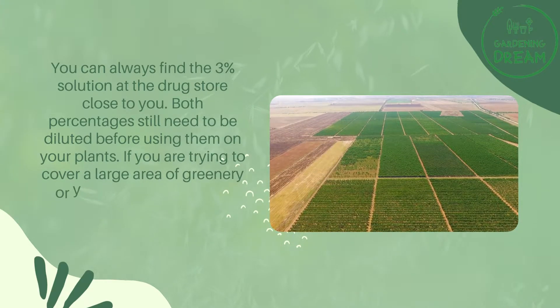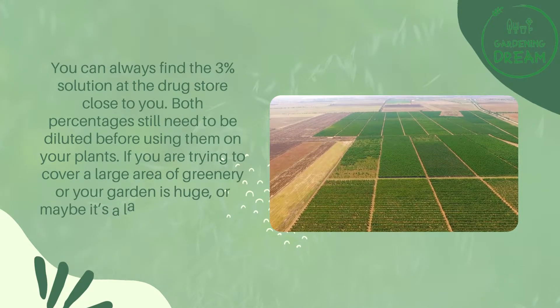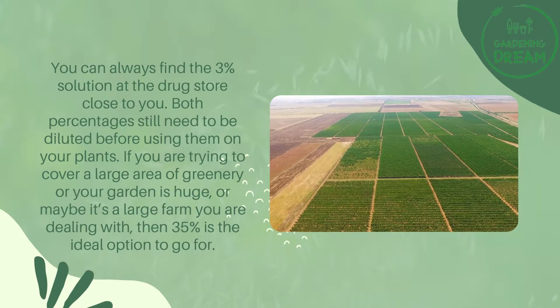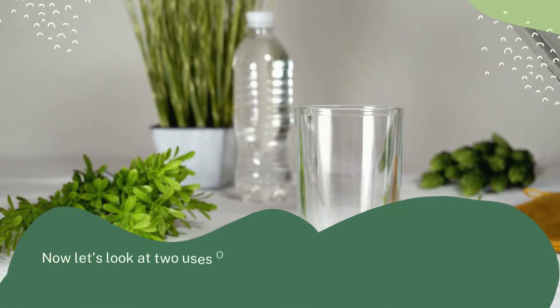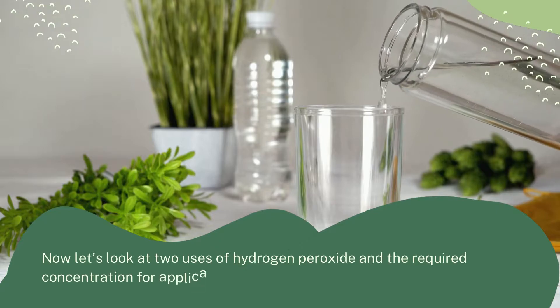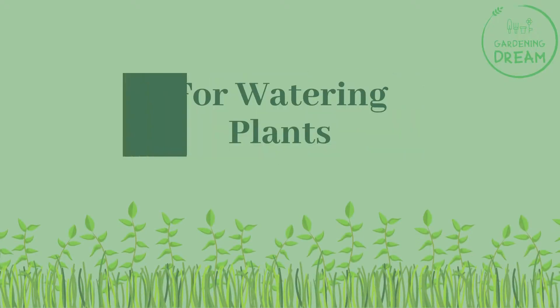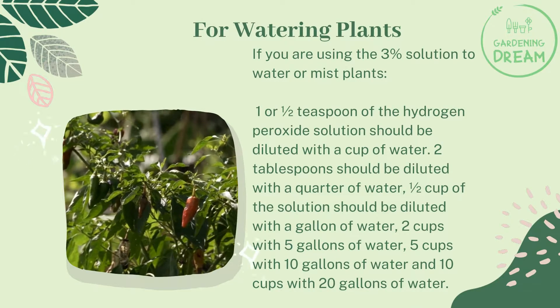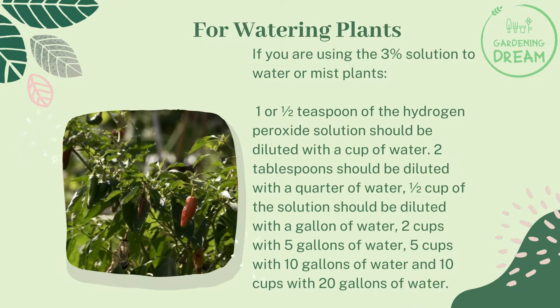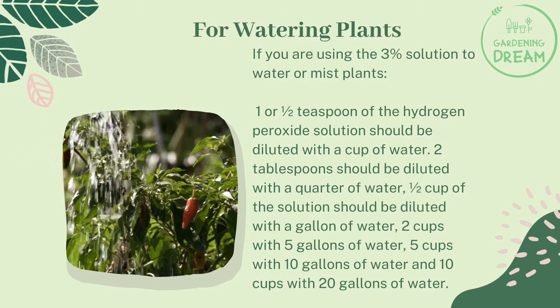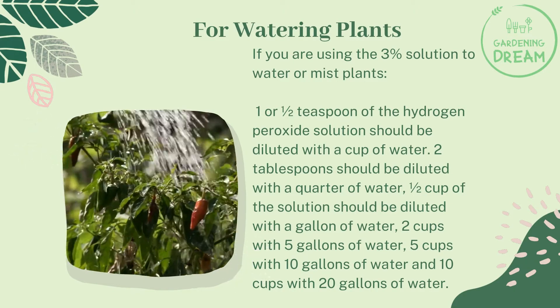If you are trying to cover a large area of greenery, or your garden is huge, or maybe it's a large farm, then the 35% solution is the ideal option. Now let's look at two uses of hydrogen peroxide and the required concentration for application. For watering plants using the 3% solution: one half teaspoon should be diluted with one cup of water.